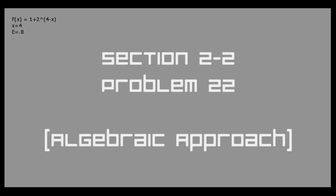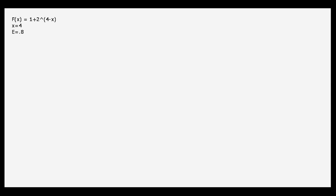Here I will show you how to solve for sigma or delta given the shown information. Here we are given the function of f of x equals 1 plus 2 to the quantity 4 minus x, as well as our x at 4 and our epsilon at 0.8.